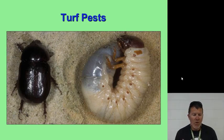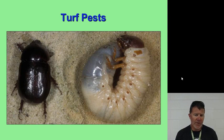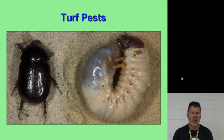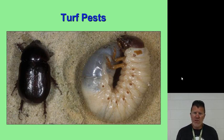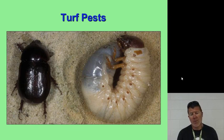Hello everyone, welcome back. We're going to get started with our second lecture for Unit 3. We're going to start talking about insects of turf grasses, and this is going to go along with Chapter 3 in your ornamental and turf textbook. I do recommend reading the chapter first. I've collectively taken several PowerPoints from the past few years and pulled bits and pieces to give you more information about the insects the textbook covers.